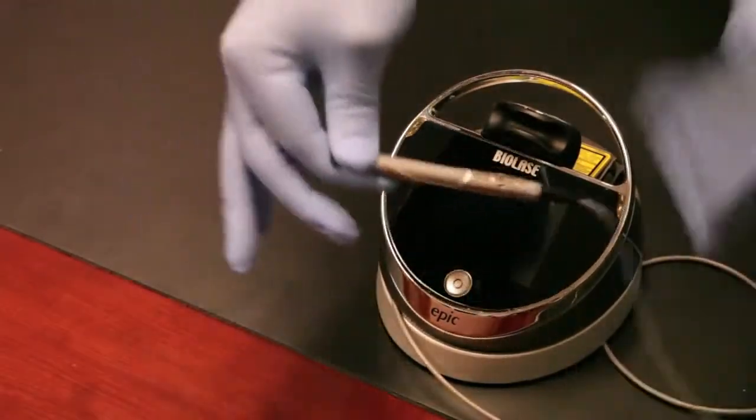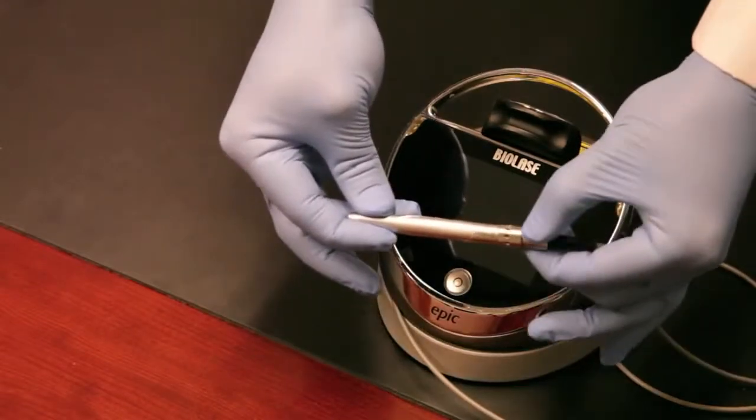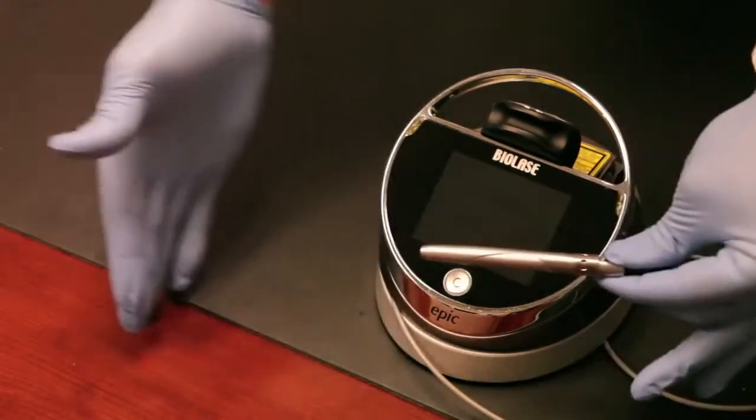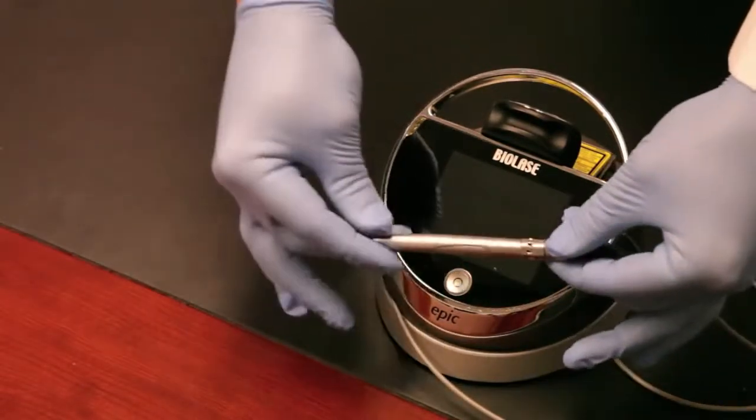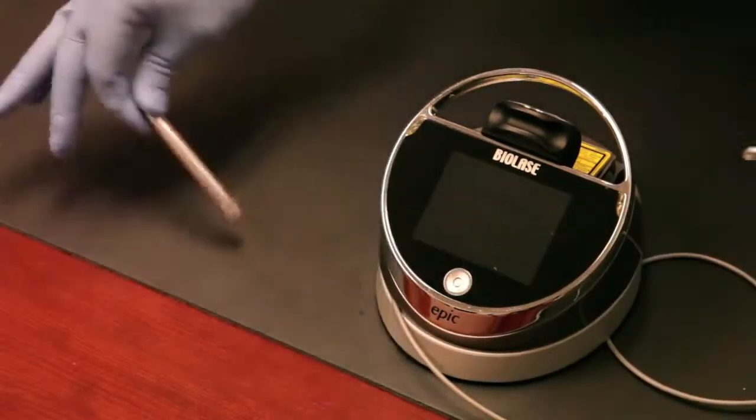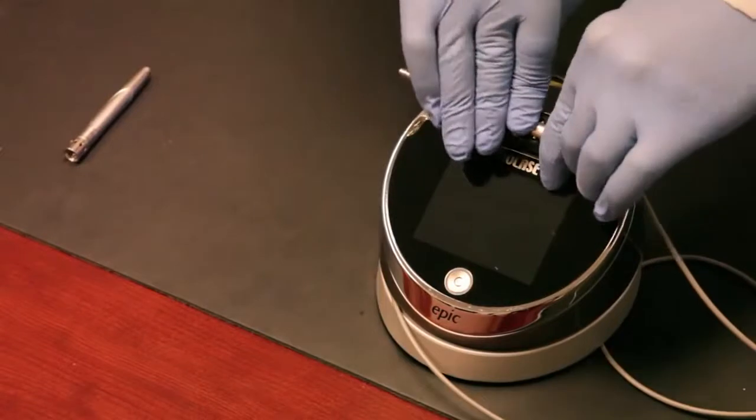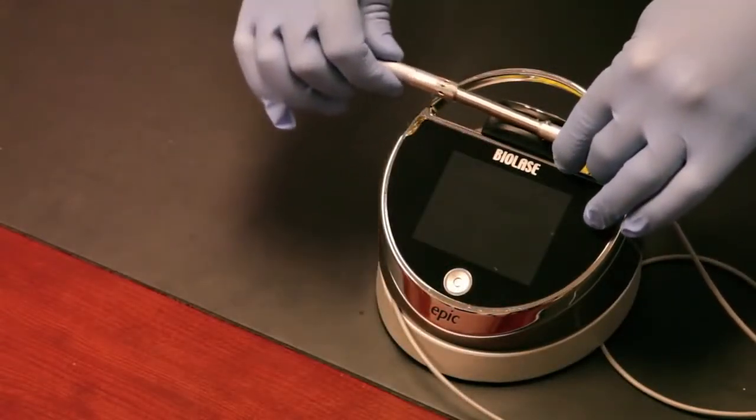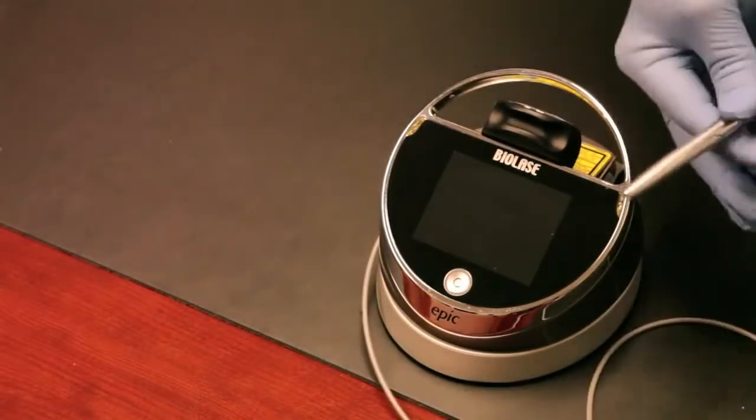To remove the handpiece or install it, there's two little buttons. You can see it slides right off. Put it on, take it off, put it on, squeeze the two buttons off it comes. This is what you'll autoclave. This is what you'll wipe down after use. You'll put this away on the handpiece and this goes into the autoclave unit. Very easy to take down and set up.